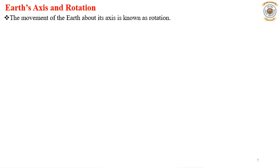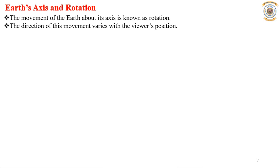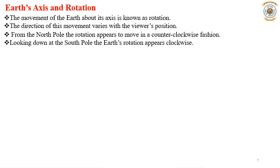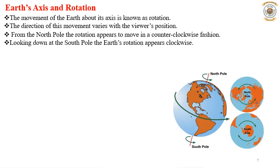Before discussing utilization further, we will look at the fundamentals of earth's axis, rotation, and how energy is radiated from the sun to the earth. The movement of the earth about its axis is known as rotation. The direction of this movement varies with the viewer's position — from the North Pole the rotation appears counter-clockwise, while from the South Pole it appears clockwise.